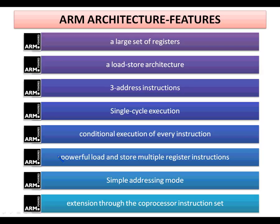ARM adds a powerful load and store multiple register instruction, mainly to maximize throughput. ARM uses a simple addressing mode where all load and store instructions are determined from register content and instruction fields; ARM supports almost 11 different addressing modes. Finally, the ARM instruction set can be extended through a coprocessor instruction set, which includes adding new instructions and data types to the program. That concludes the features of ARM architecture; next we proceed with the different versions of ARM architectures.